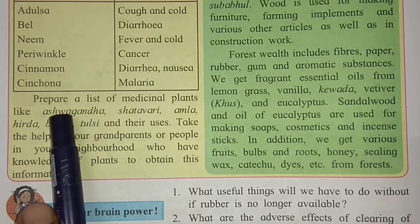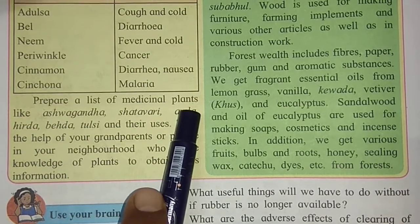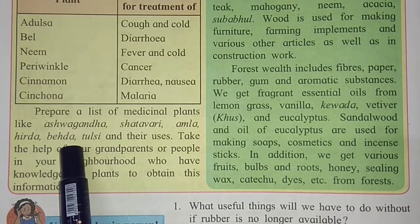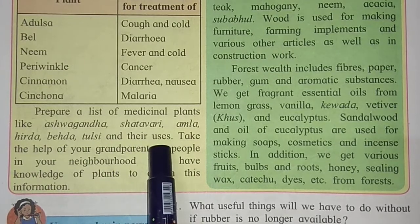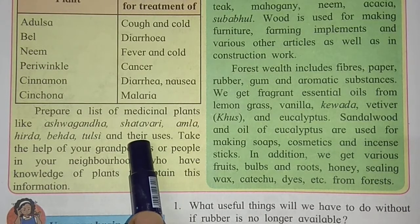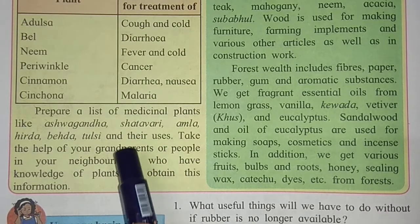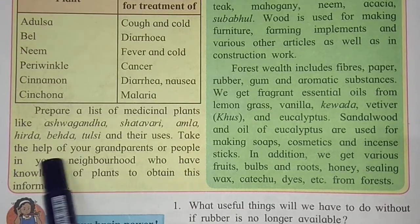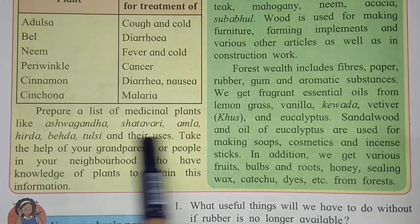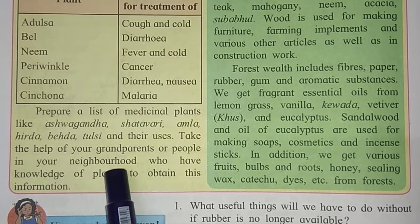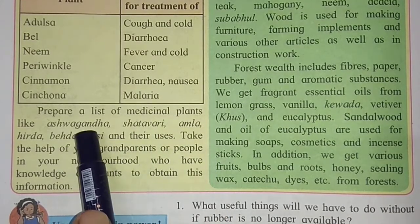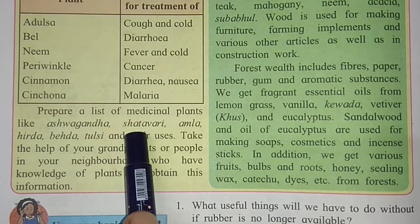There is also an activity: prepare a list of medicinal plants. You may know many — like Ashwagandha, Shatavari, Amla, Hirda, Beda, Tulsi, and Aloe vera — and their uses. Thousands of medicinal plants are there which are useful in our daily life. You can take the help of your grandparents or people in your neighborhood who have knowledge of plants. Otherwise, search on Google — type the name of the medicinal plant and its use, and a very long list will appear.